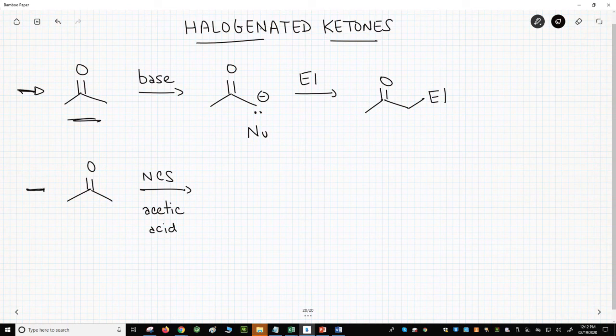On the bottom line, we have a ketone reacting with NCS and chlorosacinamide in acid. This reaction goes through an enol and forms an alpha chloro ketone.